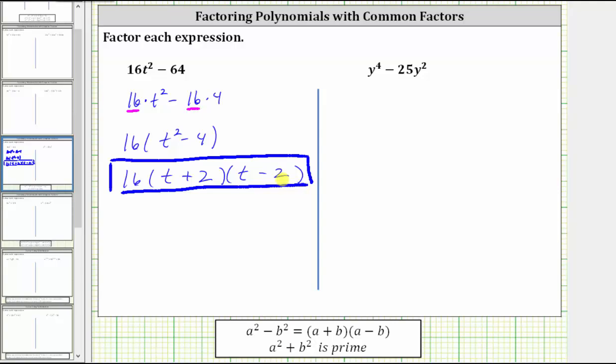I do want to show what happens if we apply the difference of squares formula from the beginning without factoring out the greatest common factor.